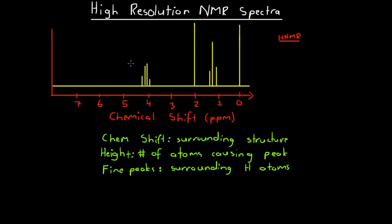Our peaks have in fact reduced in size and been split into more than one. This peak here has been split into four, this peak here has been split into three. Peak splitting is basically the defining feature of high-resolution NMR — in high-resolution NMR, one peak is split into multiple different parts.